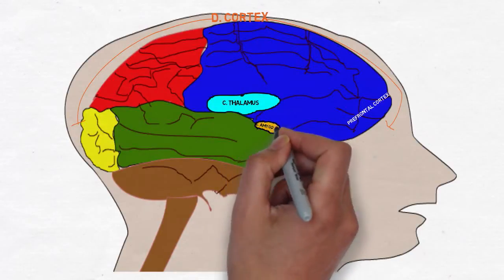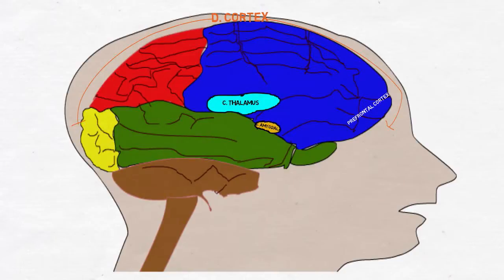The amygdala is the emotional core of the brain whose primary role is to trigger the fear response. Information passing through the amygdala is associated with an emotional significance.